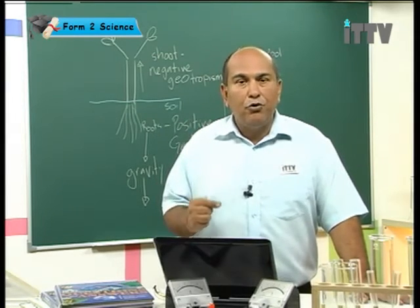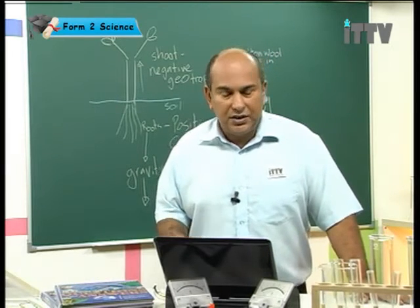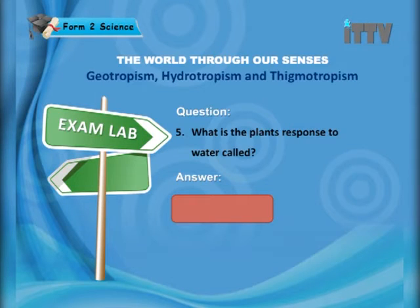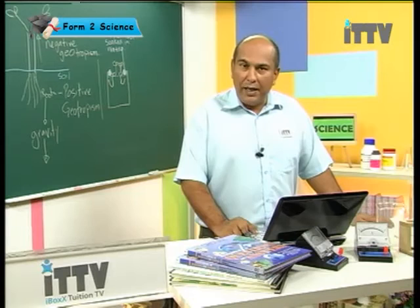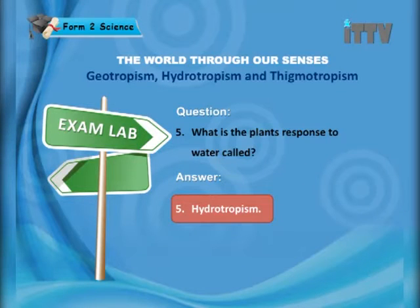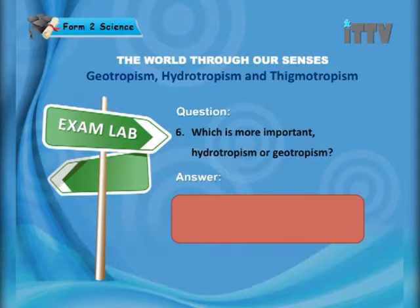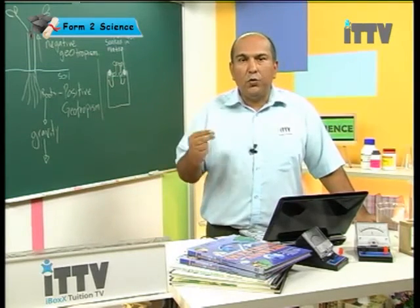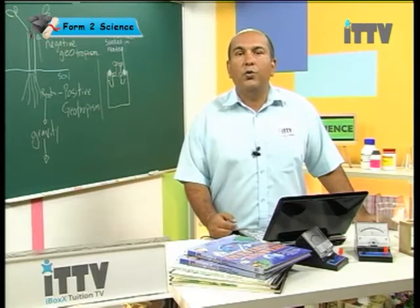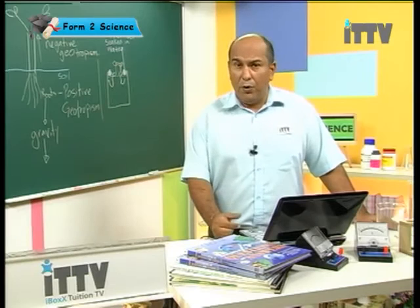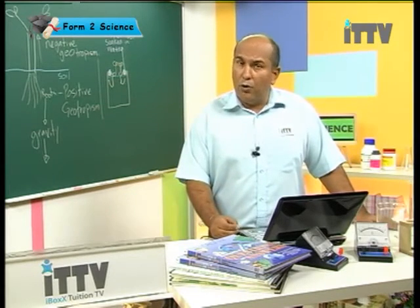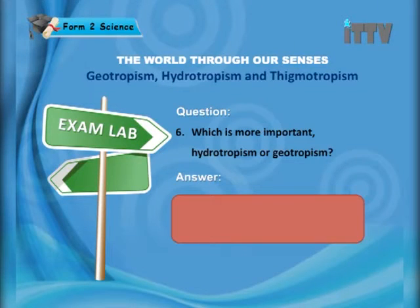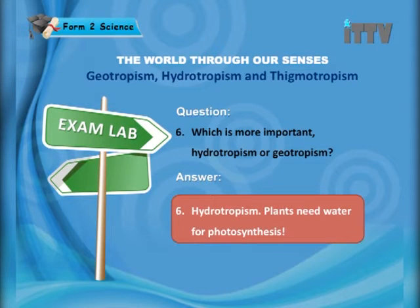Now let's try some hydrotropism questions. What is the plant's response to water called? The answer is hydrotropism. Which is more important — hydrotropism or geotropism? Remember the experiment demonstrated on the board: the roots grew towards the water, not towards gravity. The answer is hydrotropism, because plants need water for photosynthesis.